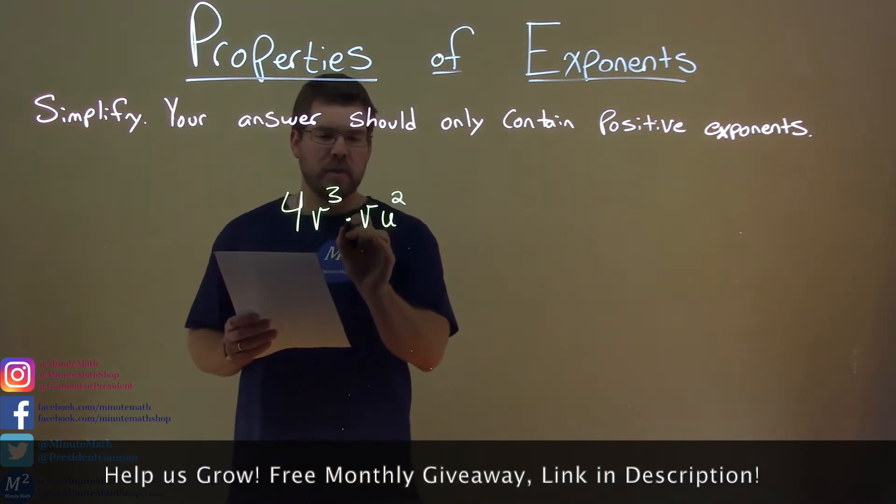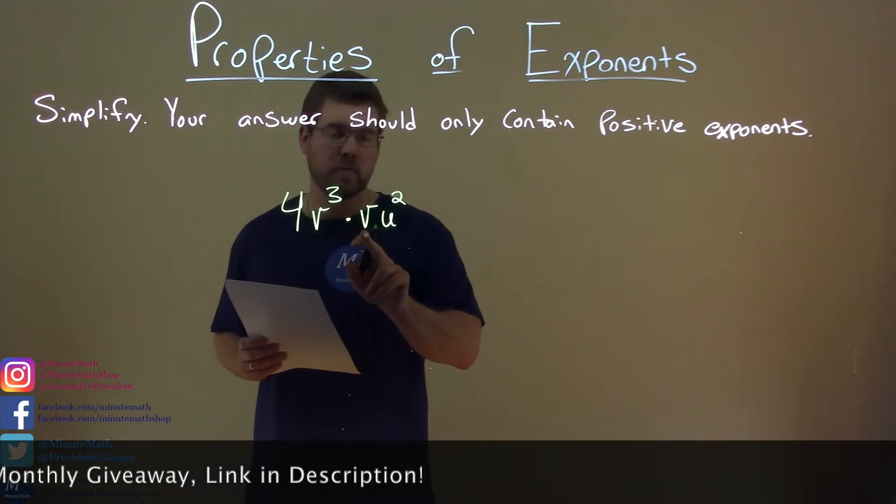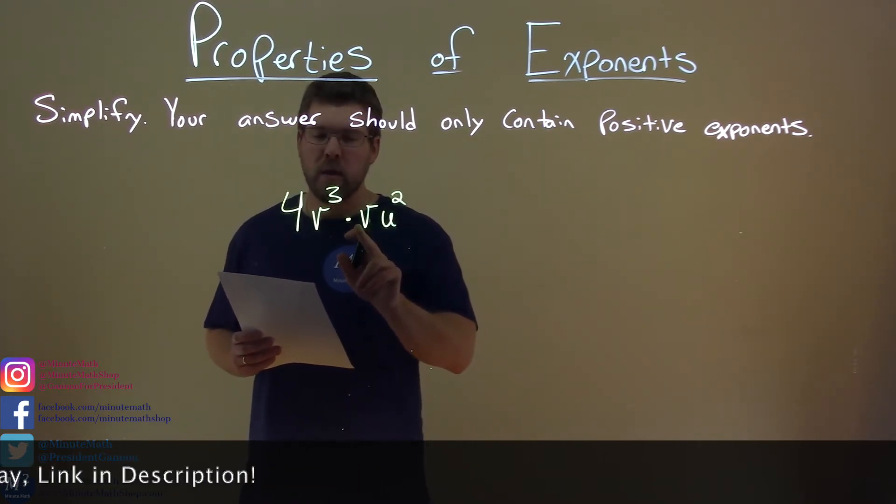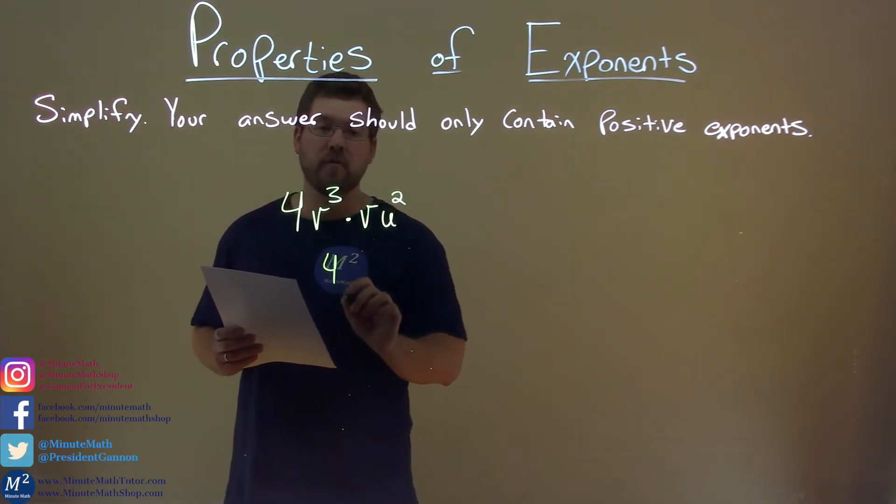Well, one thing we're noticing here, we have a coefficient of 4 here, and in front of this v is a coefficient of 1. 1 times 4, multiply them together, and we get just 4.